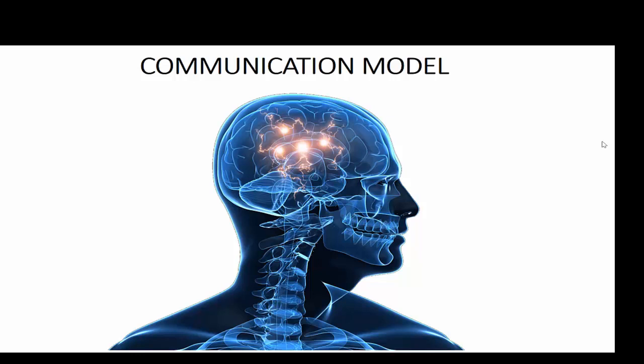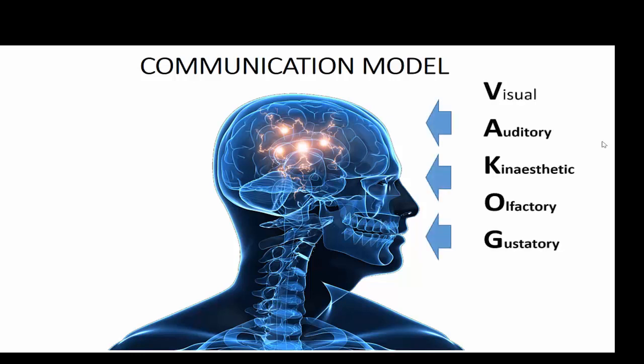We receive information from the outside world through our five senses, commonly known as VAKOG: visual through our sight, auditory through our ears, kinesthetic through our touch and feel, olfactory through our noses, and gustatory through our mouth.